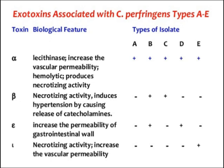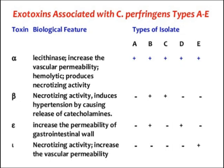Beta toxin is present in Clostridium perfringens types B and C — it is not found in types A, D, or E. Beta toxin also has necrotizing activity and induces hypertension by causing release of catecholamines.